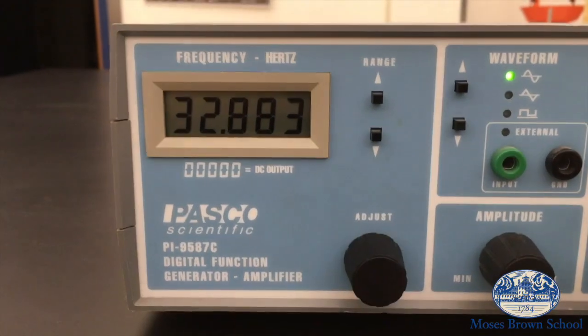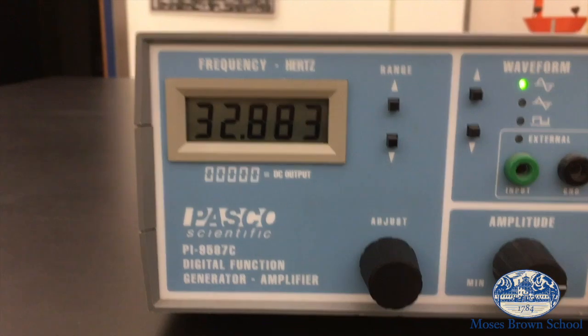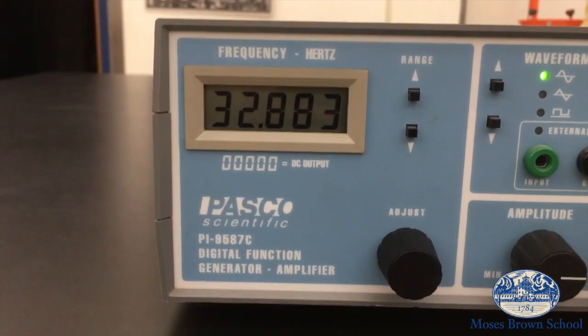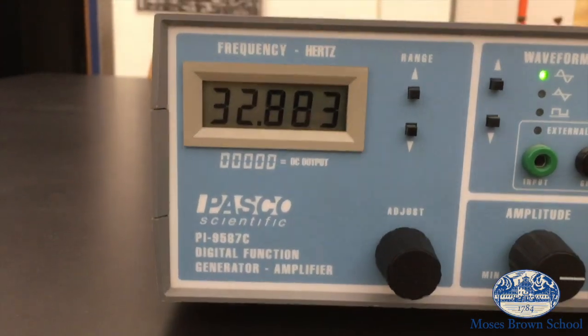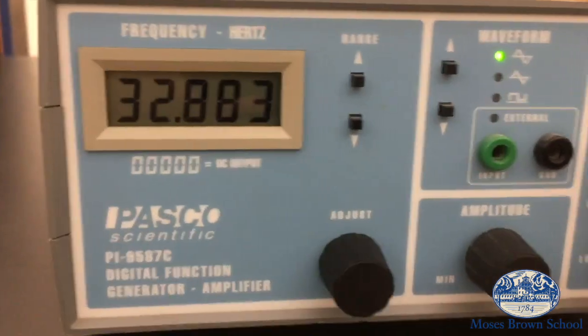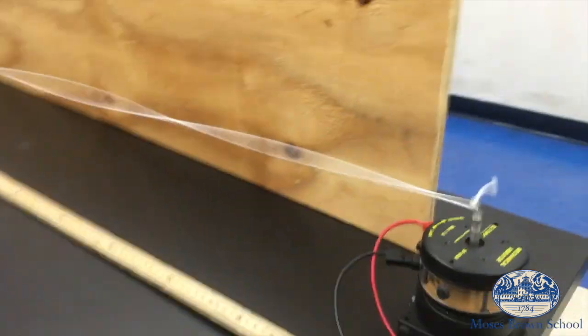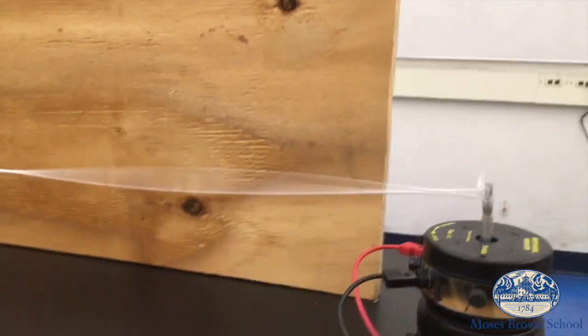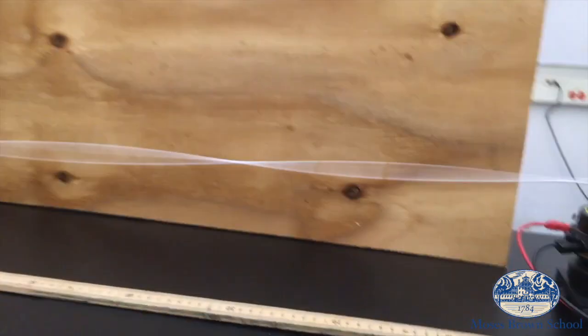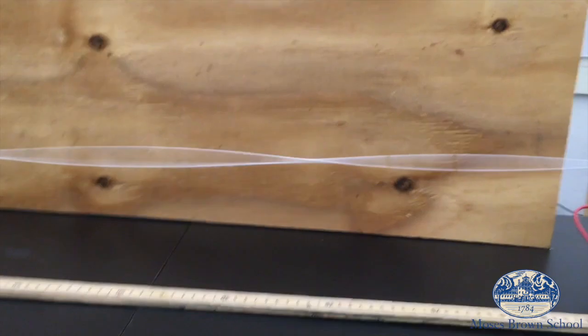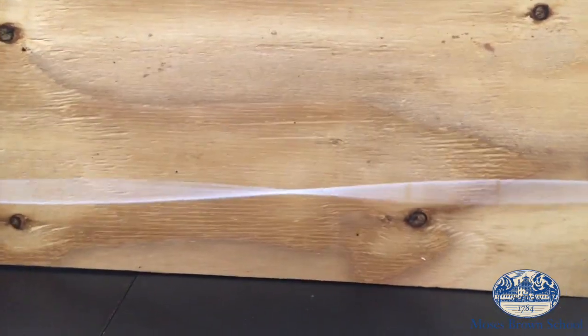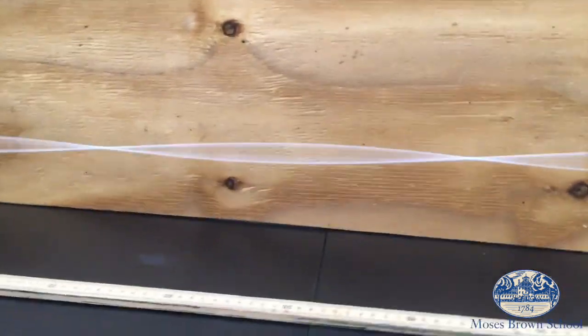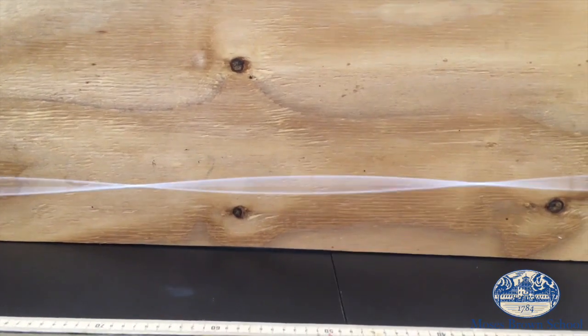Now the frequency is about 32.9 Hertz which seems like a weird random number, but it's actually a very nice special number because now if I look at the string you can see there's a nice stable large amplitude motion. There are points along the way where the string is hardly vibrating at all, sitting essentially still, and then there are points in between where it's vibrating a lot.